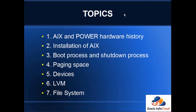In this training we will cover a total of 19 topics. The first topic is AIX and Power hardware history — to master AIX technology you should know the AIX versions and Power hardware versions. The second topic is installation of AIX. I'll show you how to install the AIX operating system on Power hardware. There are three types of installation: new and complete overwrite, migration installation, and preservation installation. I'll be demonstrating the new and complete overwrite.